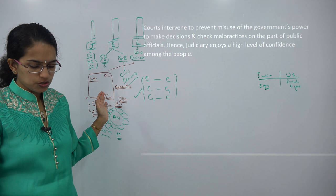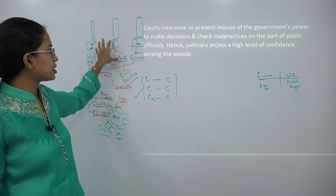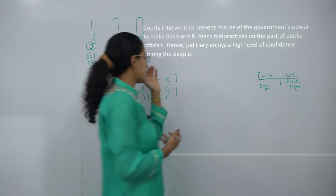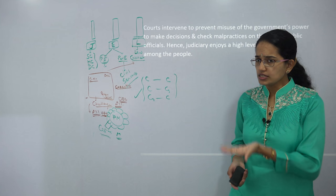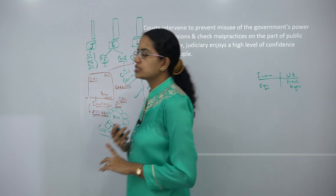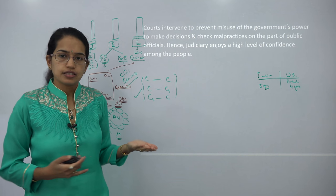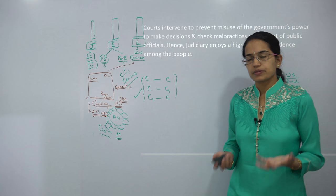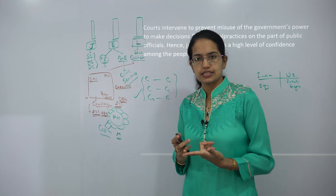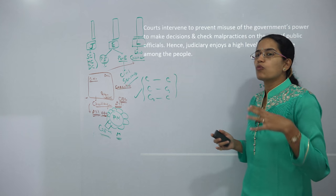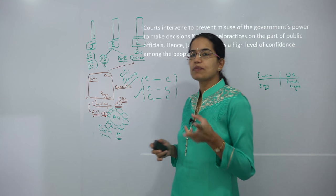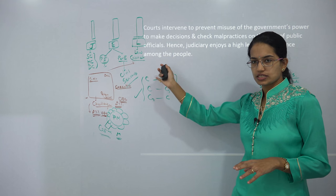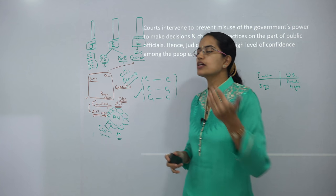To summarize, we have understood how the legislature works through Parliament, how the executive works through political and permanent executives, and what the role of the judiciary is and what kinds of cases it resolves. Some important questions from this chapter: What are the three pillars of the Indian parliamentary form? What is the difference between political executive and permanent executive? Is the Prime Minister part of the executive or the legislature?